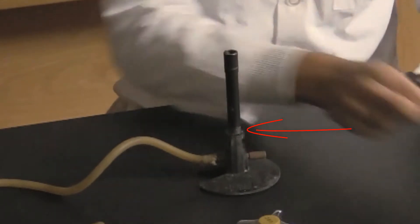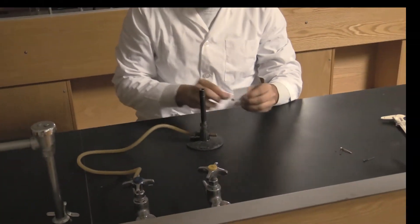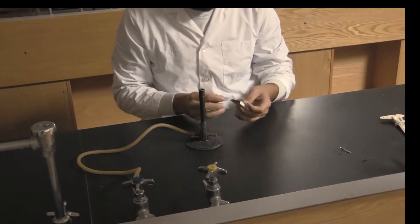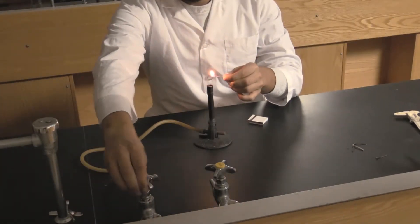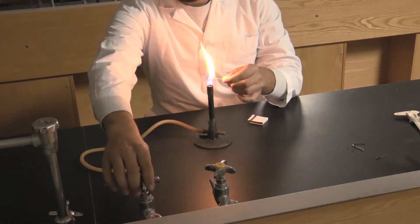Solem will light the burner with a match. Turning on the gas, he brings the match to the top of the barrel and lights the gas. He can now adjust the flame by changing the gas flow and barrel position.